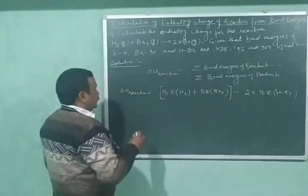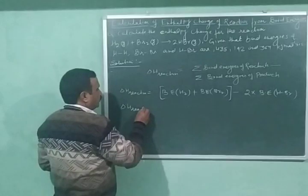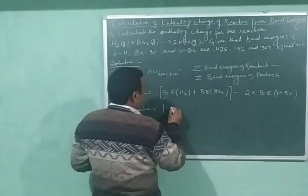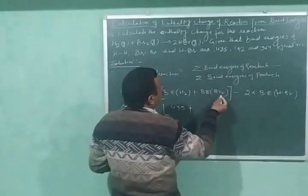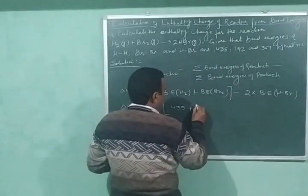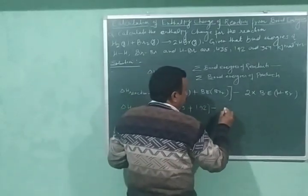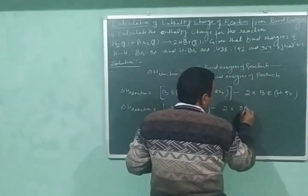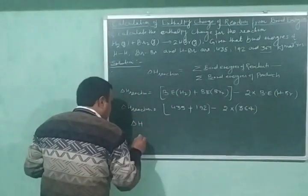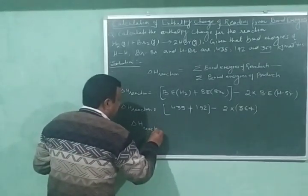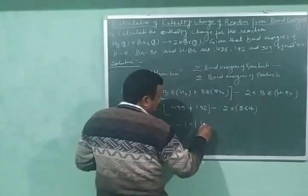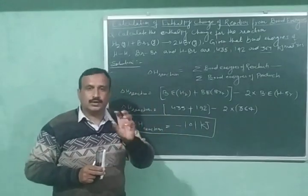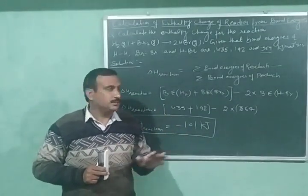Substituting the values: delta H equals 435 kilojoule (H-H bond energy) plus 192 kilojoule (Br-Br bond energy), minus 2 into 364 kilojoule (H-Br bond energy). Solving this gives delta H of the reaction equal to minus 101 kilojoule. With the help of this relationship, we can directly calculate delta H of the reaction using bond energy data.